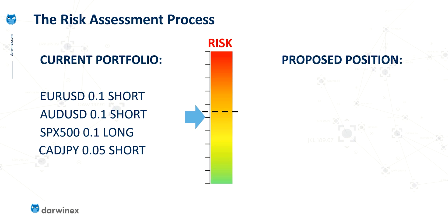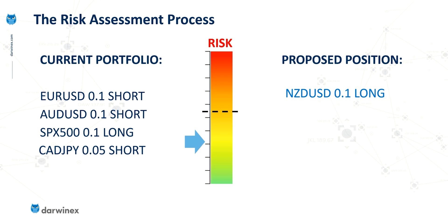Then there might be an additional signal for a New Zealand dollar USD long trade. Previously, a short trade was correlated to euro-dollar and Aussie-dollar in the current portfolio. But now that it's a long trade in the opposite direction, that effectively reverses the correlation coefficient, and could actually reduce the overall portfolio risk. In this example, that's exactly what happens — the blue arrow moves down the risk scale. Whenever a proposed position reduces risk, it's probably always a good idea to take it, so we would accept that new position into the portfolio.